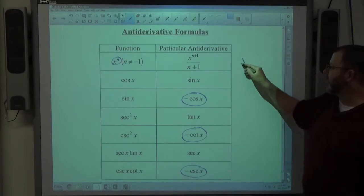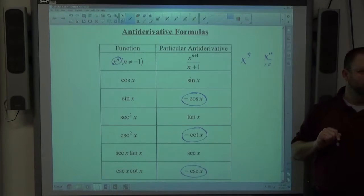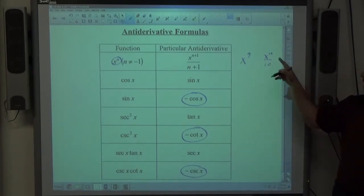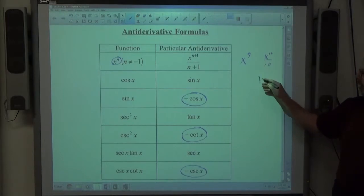For example, if it's x to the ninth, its anti-derivative is x to the tenth over ten. It just undoes the power rule. So if I had this term, ten times one-tenth makes one, and we drop the power by one. The anti-derivative formula just goes the other way.